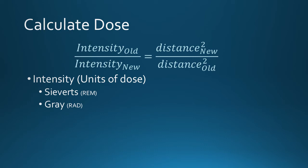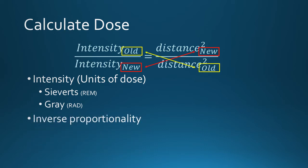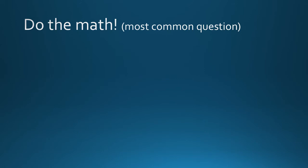One thing to notice in this equation is that the old and new units are inversely proportional — as one increases, the other gets smaller. The most common dose question is: you receive a particular dose of radiation at a given distance; what dose will you receive at a new distance?